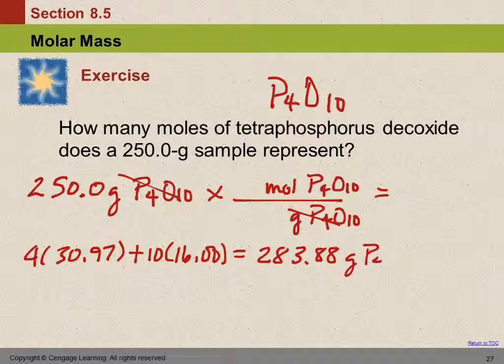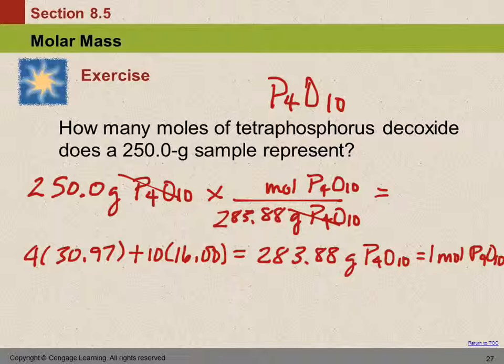283.88 grams of P4O10 is equal to 1 mole of P4O10. So it's that many grams. It goes in here next to the grams. Sometimes students, you know, just prefer to multiply. Like, I don't like to divide. I'm going to put the number on top so I can multiply. You can't do that. Well, you can, but you're going to get the answer wrong.